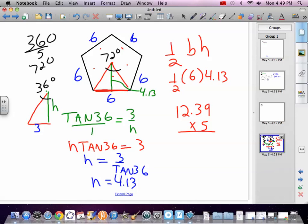12.3 times 5 equals 61.95. That is our pentagon, 61.95 centimeters squared.